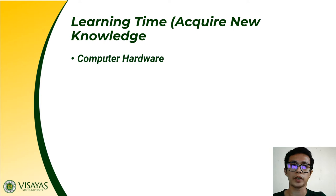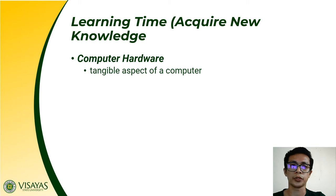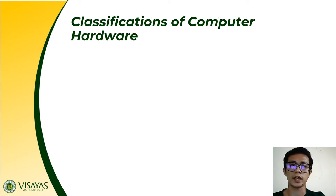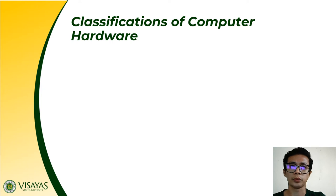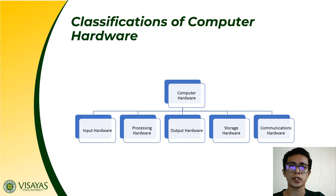Now let us proceed with our discussion proper. Computer hardware are the physical or tangible aspect of a computer system — meaning you can see and you can touch them. Any devices from a computer system where you can see and touch are referred to as computer hardware. Computer hardware can be classified according to its basic function into input hardware, processing hardware, output hardware, storage hardware, and communications hardware.